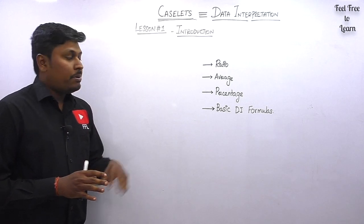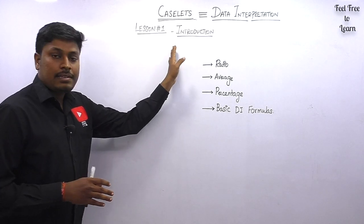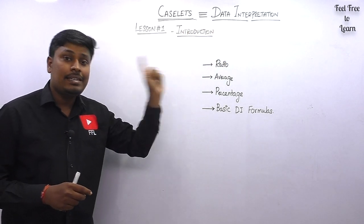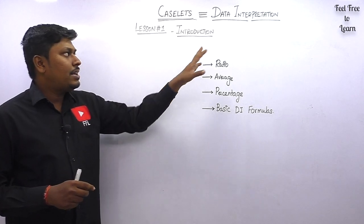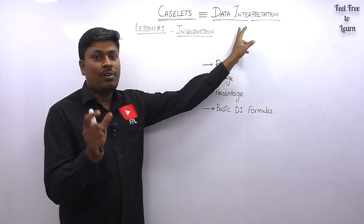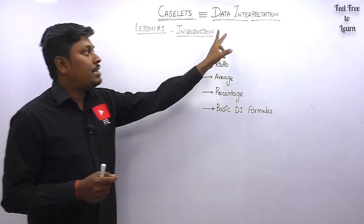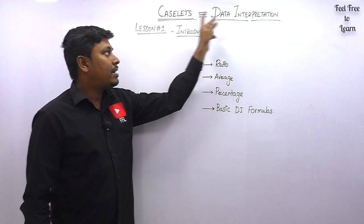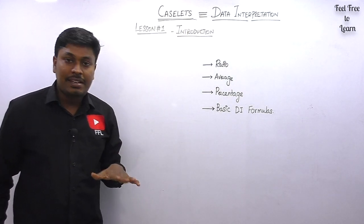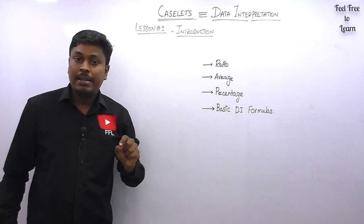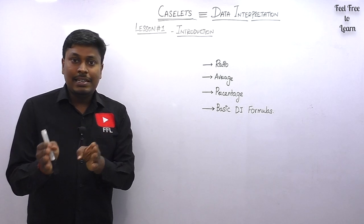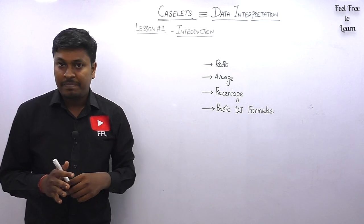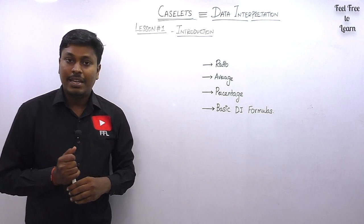So remember that caselet is the most important topic in quantitative aptitude. According to my knowledge, before learning the caselet topic, try to learn data interpretation first — shortly called DI. Try to learn DI first, and after that learn caselet, so it will be easier. Both topics are 80% equal in concepts.